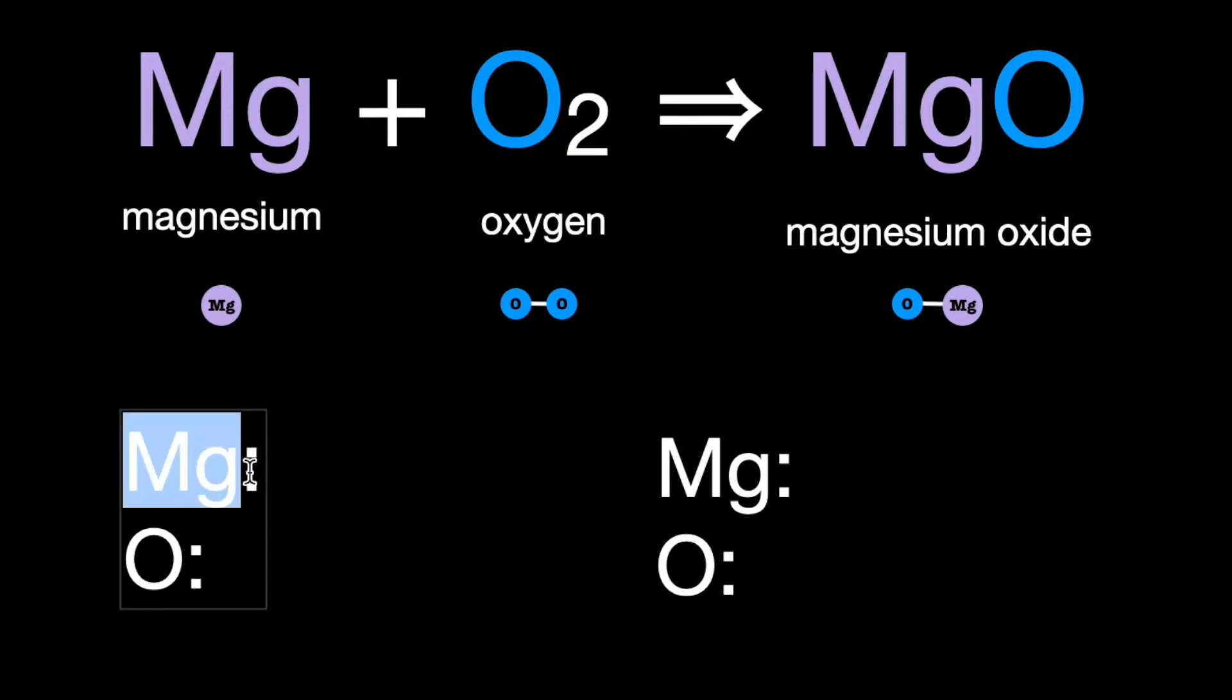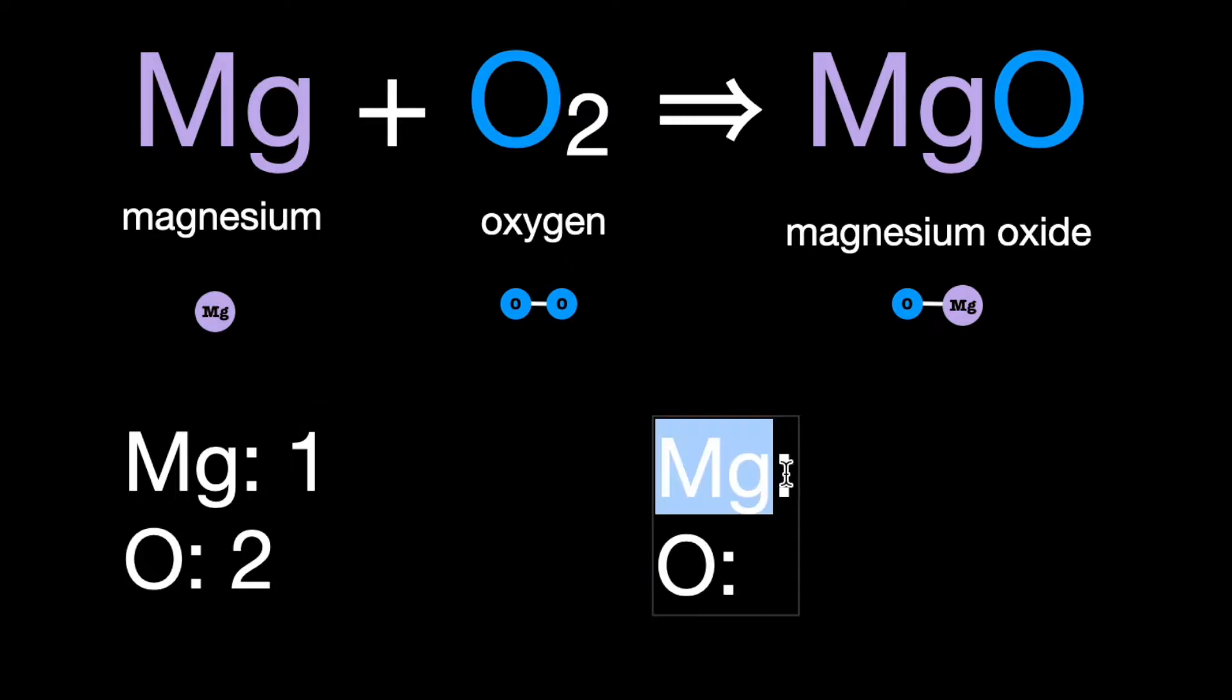Let's count up what we have to start with. On the left, we have just one magnesium, and we have two oxygen. On the right, we have one of each, and we can see them very clearly in our molecule of magnesium oxide.